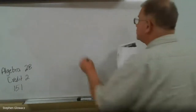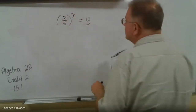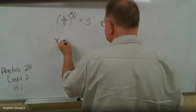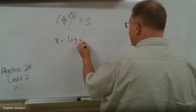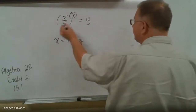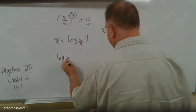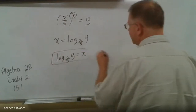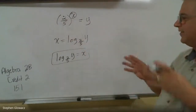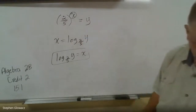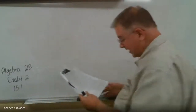For number two, we have (2/5) to the power of x equals y. A logarithm is an exponent, so we have x equals log. The base in the exponential, two-fifths, is the base in the logarithm, and the only thing left is y. So we get log base 2/5 of y equals x. It's a pattern — there are only three things to place, and it's the same procedure every time.